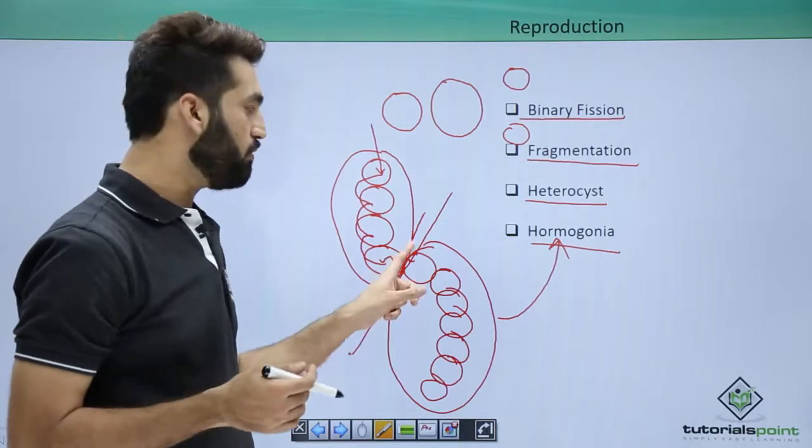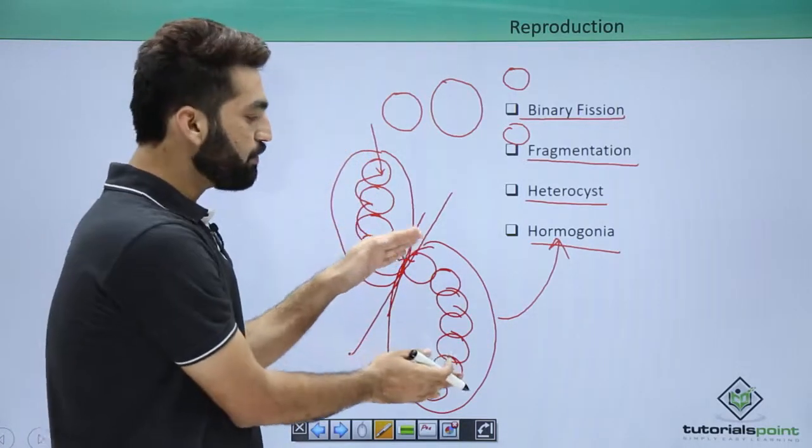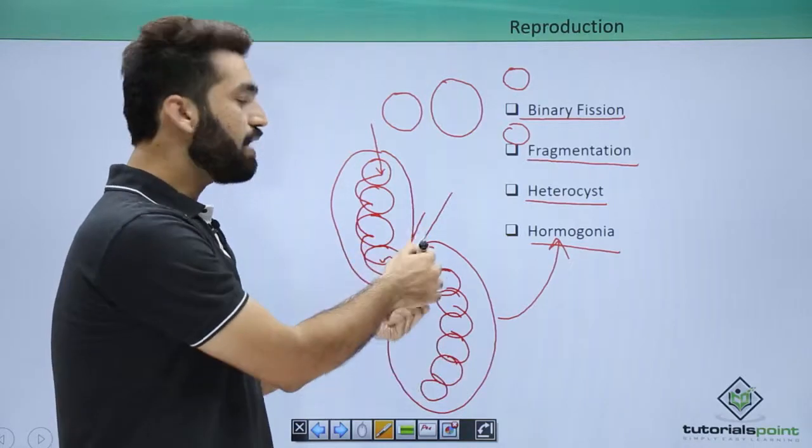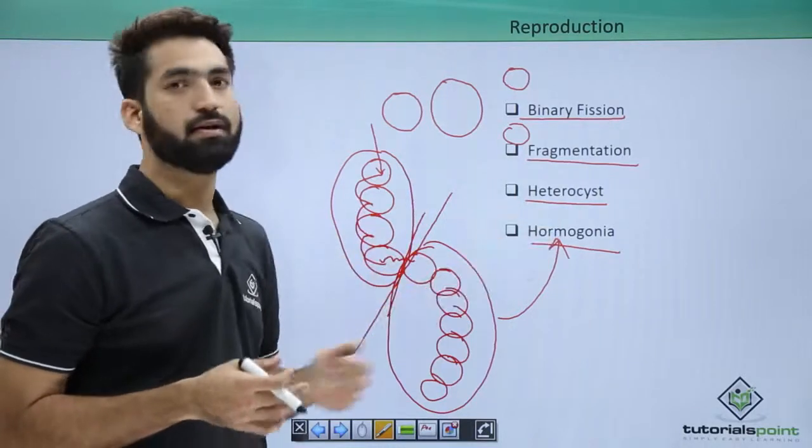When the homogonia separates, the killed cells remain, but the saved cells will form new cyanobacteria and arrange into filaments. This is how they reproduce.